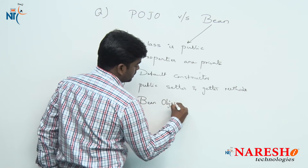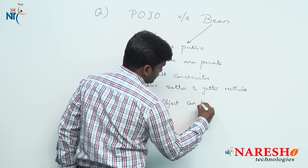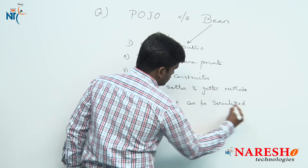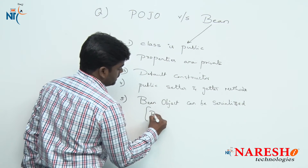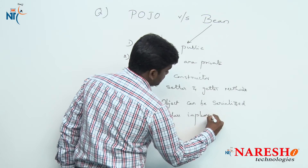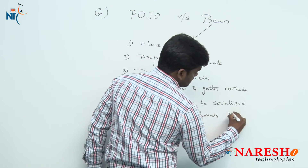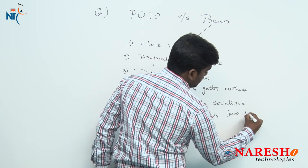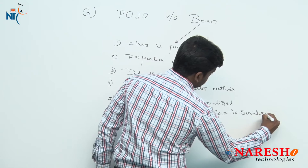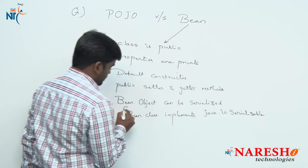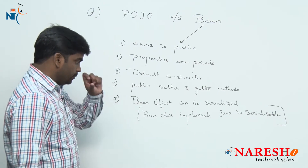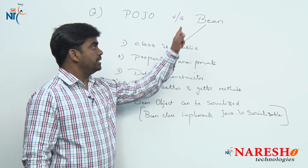A Bean object can be serialized. How? Because the Bean class must implement the Serializable interface. The Serializable interface is available in the java.io package. This is mandatory — it is the only one added rule in a Bean class.